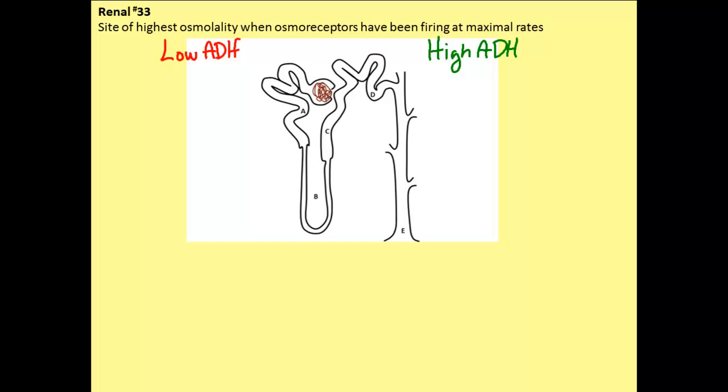We will start at A, which is within the proximal convoluted tubule. If ADH is low, we would expect an osmolality of about 300 milliosmols and if ADH is high, we would also expect to see an isoosmotic solution of about 300. That is because ADH does not have very much an effect on the proximal nephron structures.